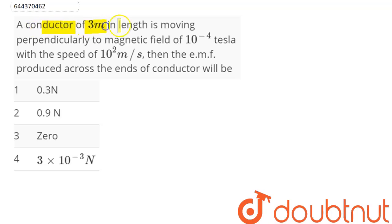Question is, a conductor of 3 meter in length is moving perpendicularly to a magnetic field of 10 power minus 4 tesla with the speed of 10 power 2 meter per second. Then the EMF produced across the ends of conductor will be.